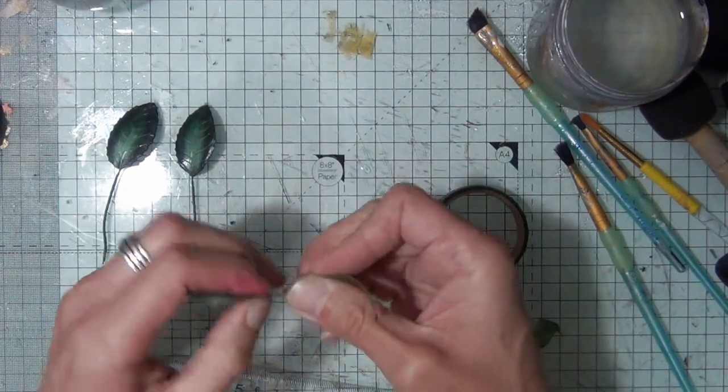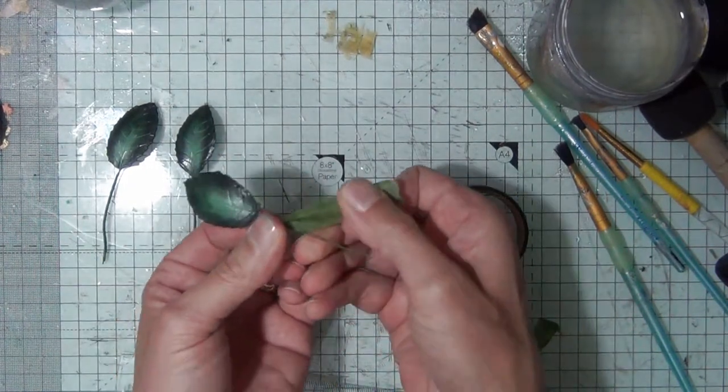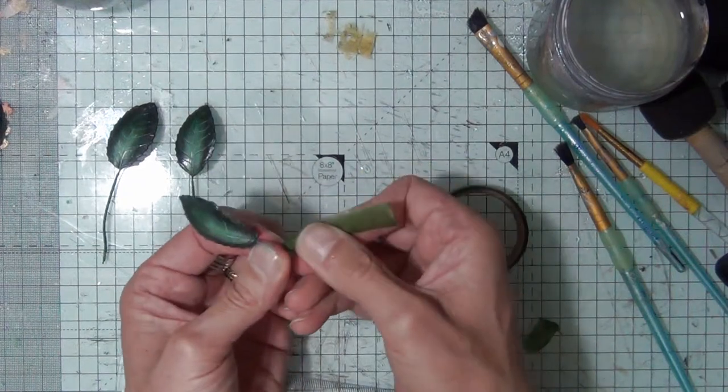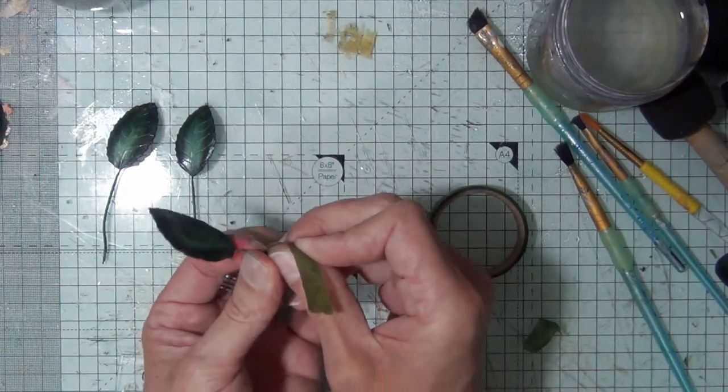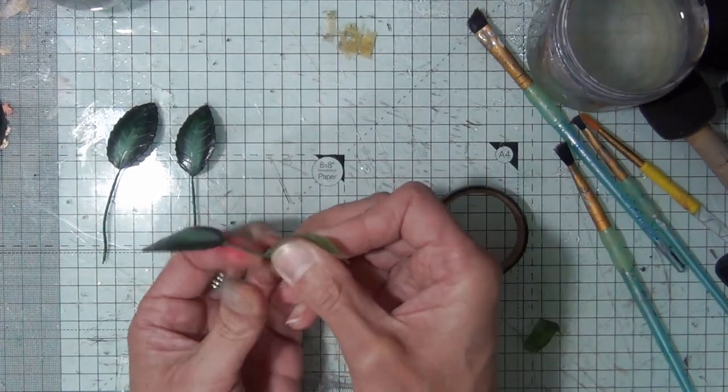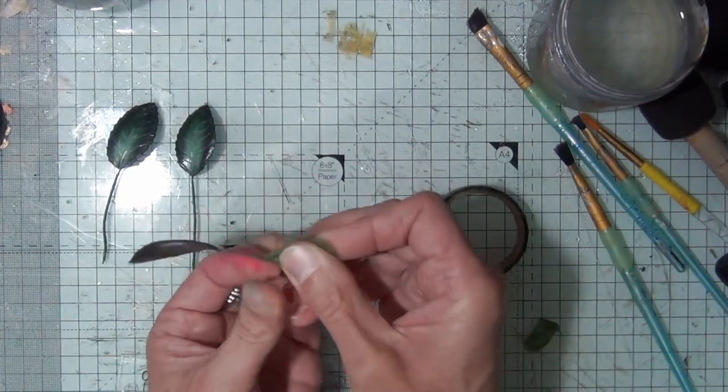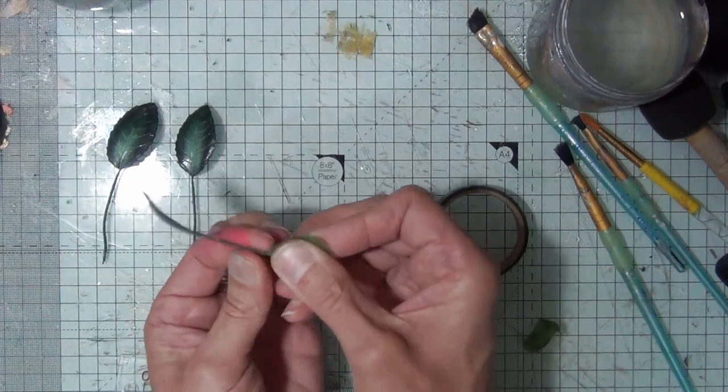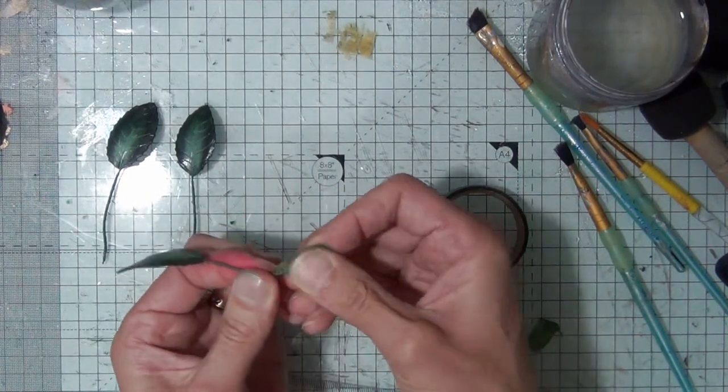So you can see even five centimeters of the florist tape is going to be plenty to wrap that wire. So obviously at 45 degrees it covers the wire—that's much quicker than if you were to try to just wrap it all the way around.